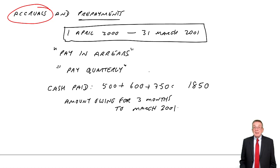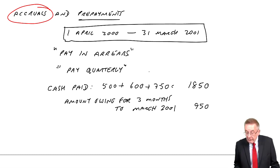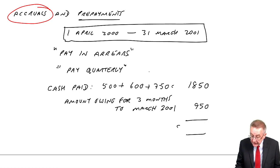So the amount owing for three months to March. He's been using it. He does owe money. But even though he hasn't had the bill, we're told he's estimated he owes 950. So that's how much he still owes.